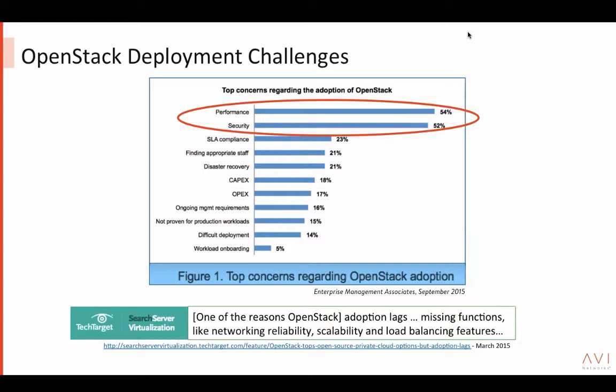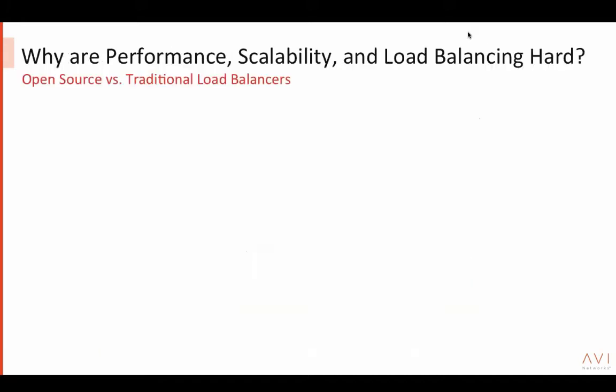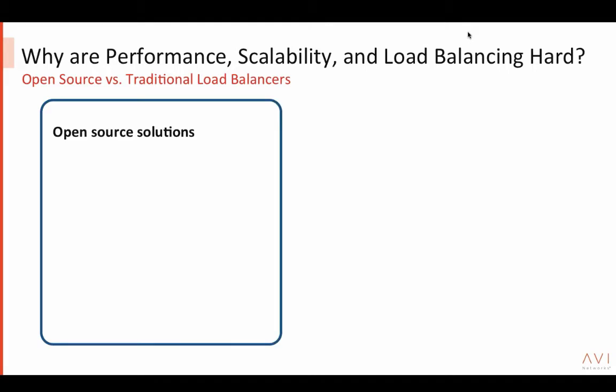You might wonder: OpenStack is a collection of open source components, so why are performance, scalability, and load balancing so hard? It comes down to a choice between open source solutions and traditional load balancers. On one hand, open source solutions such as HA Proxy are integrated with OpenStack distributions, which is a plus — you can get started very easily.